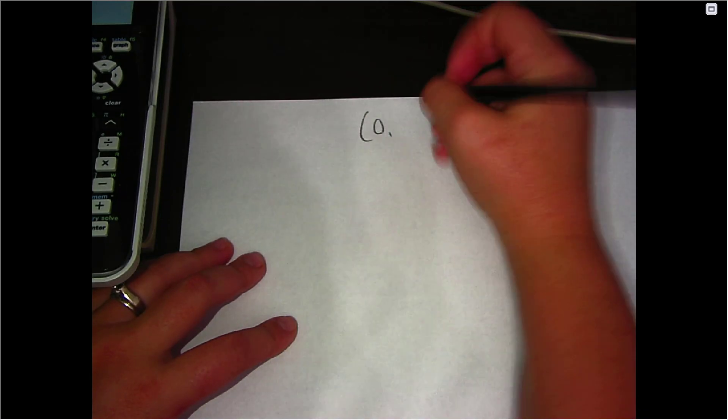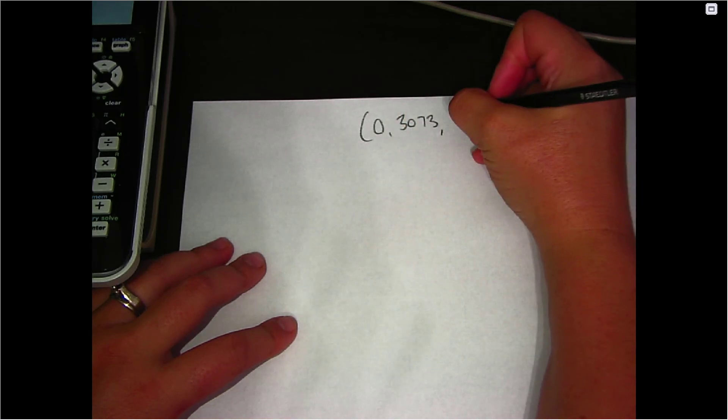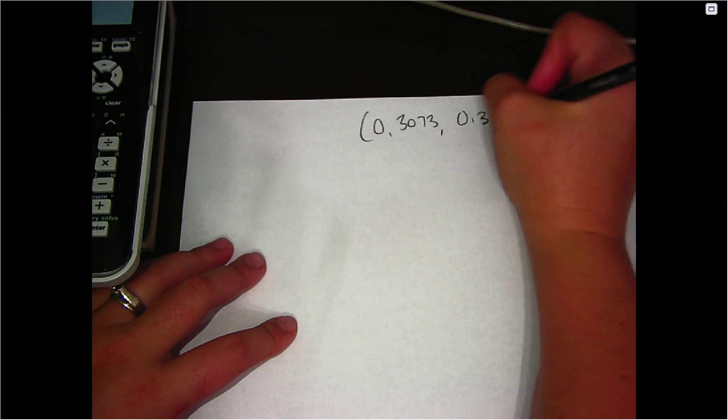So in the last video we came up with a confidence interval that ranged from 0.3073 up to 0.3327. So that's the interval itself.